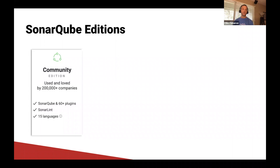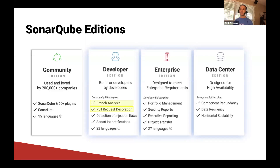We have four editions to fit every use case, starting with Community Edition. Community Edition is free and open source, used by thousands of companies and organizations, and supports 15 languages. Branch analysis and the PR decoration feature we've been looking at today starts with Developer Edition. We also have Enterprise and Data Center Editions for more advanced use cases.